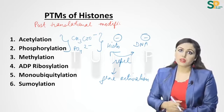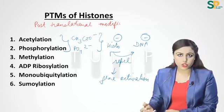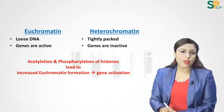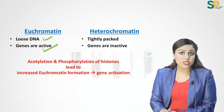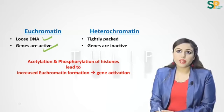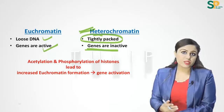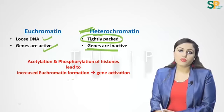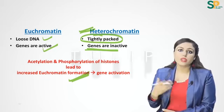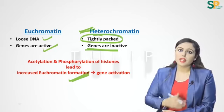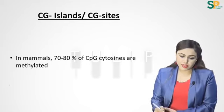Because histones and DNA now repel each other, this leads to gene activation. Acetylation and phosphorylation of histones lead to gene activation; deacetylation and dephosphorylation lead to gene inactivation. Euchromatin is loose DNA where genes are active, while heterochromatin is tightly packed DNA with proteins where genes are inactive.